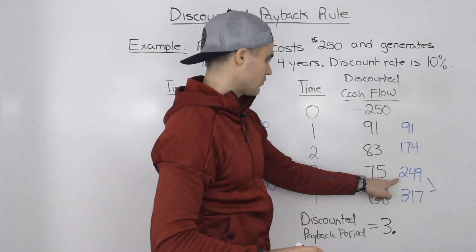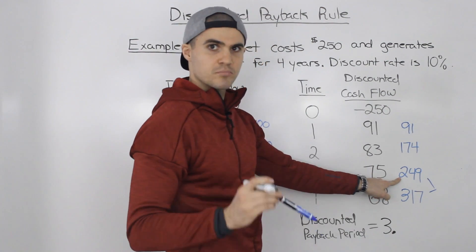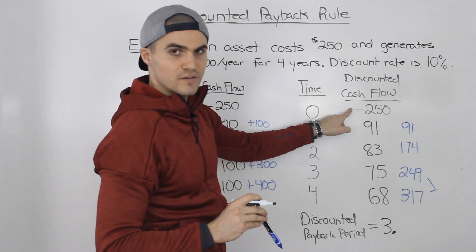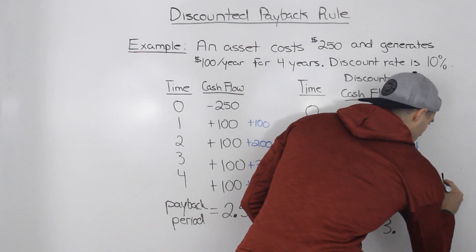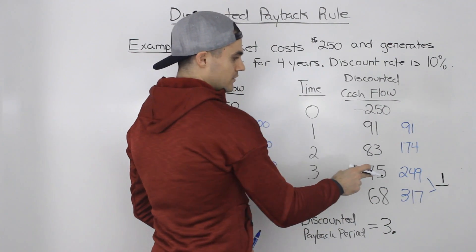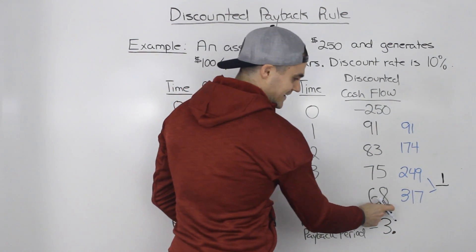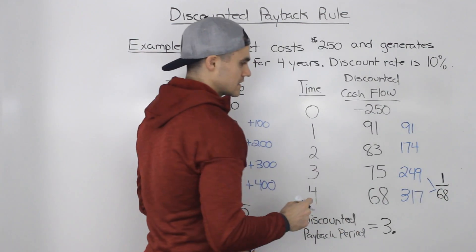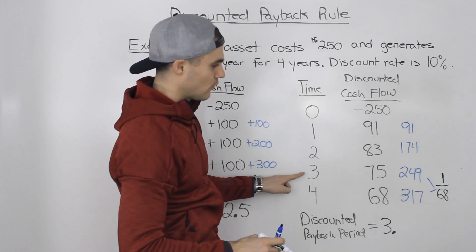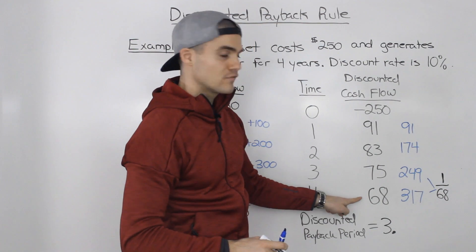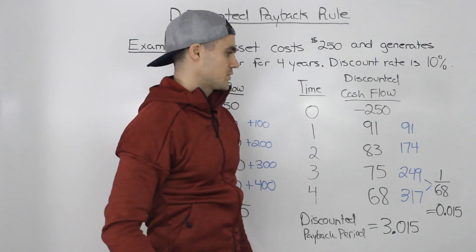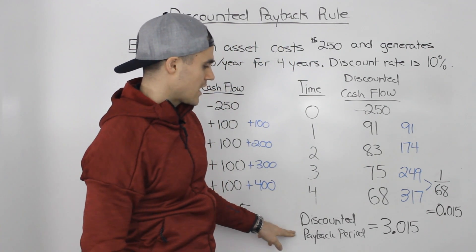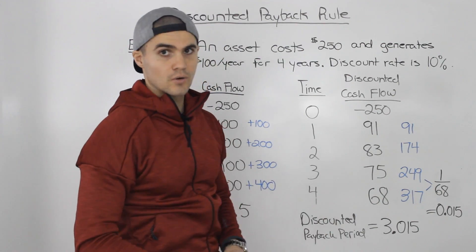Up until year three, in terms of present value cash flows, we've recovered $249. To get to $250 we only have to recover $1 more. We divide that $1 by the next year's discounted cash flow of $68 to get how long between year three and four it takes to recover that $1. $1 divided by $68 gives 0.015, so the discounted payback period is 3.015 years.